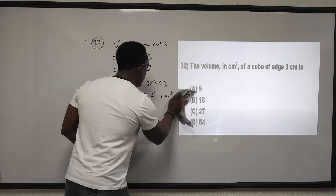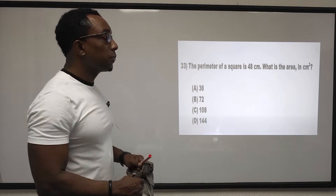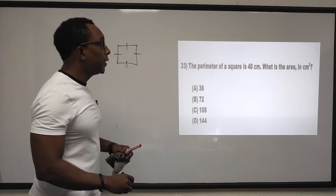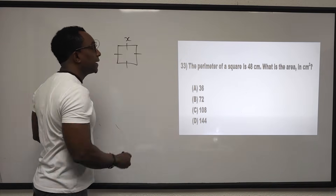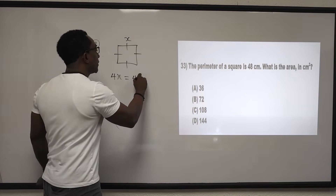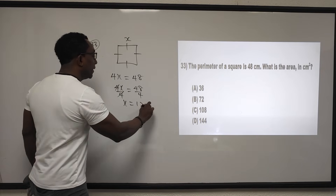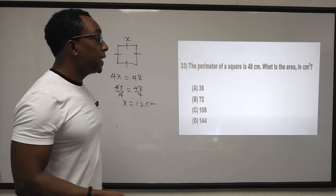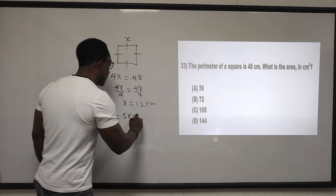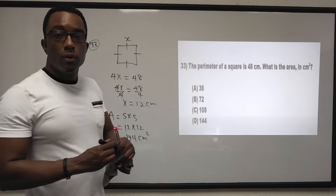Question 33: the perimeter of a square is 48 centimeters. What is the area in cm squared? All four sides are equal, so 4x equals 48, giving x equals 12 centimeters. Area equals side squared: 12 by 12 equals 144 cm squared. The answer is D.